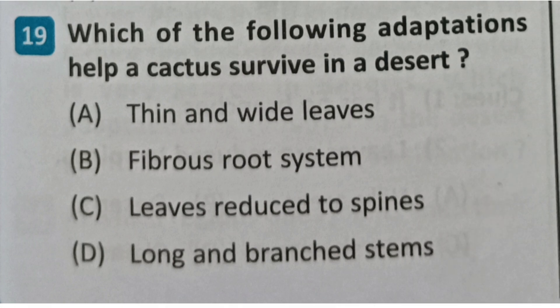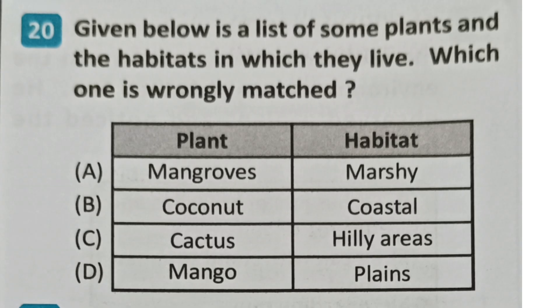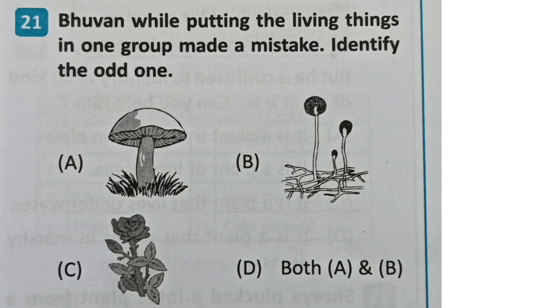Next question: Given below is a list of some plants and the habitats in which they live. Which one is wrongly matched? The correct answer is D. Bhuvan, while putting the living things into one group, made a mistake. Identify the odd one out. The correct answer is C.